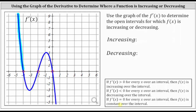The derivative is also positive when x is greater than negative two and less than zero. And notice how the derivative is negative when x is greater than negative four and less than negative two, as well as when x is greater than zero.